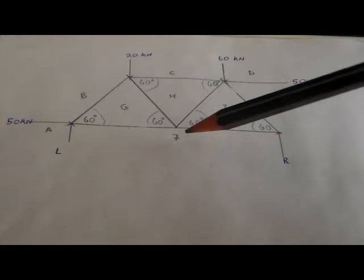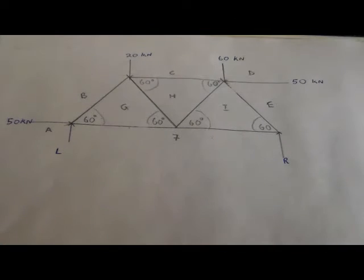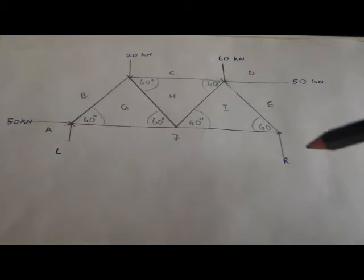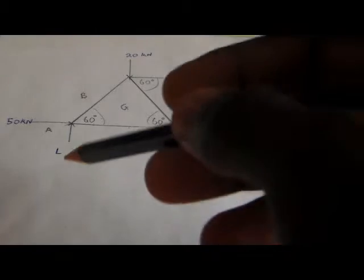Now let's look at the simple frameworks. On the simple frameworks, if you have to solve the members of the frame — which is F, G, B, C, H, E, I, and D — to calculate these members of this framework, we have to calculate first the support. After calculating the support, then we have to balance the support.